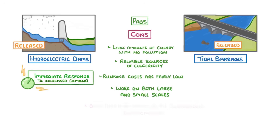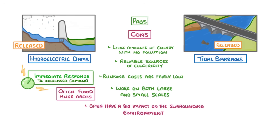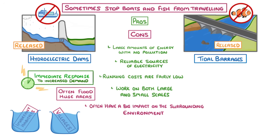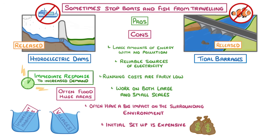Their main downside is that they often have a big impact on the surrounding environment. Hydroelectric dams, in particular, often flood huge areas because of their size, and this can end up submerging important habitats and sometimes even whole villages. Both structures also sometimes stop boats and fish from travelling up or down the river, which can negatively affect fish migrations. And finally, the initial setup of both methods is often expensive.